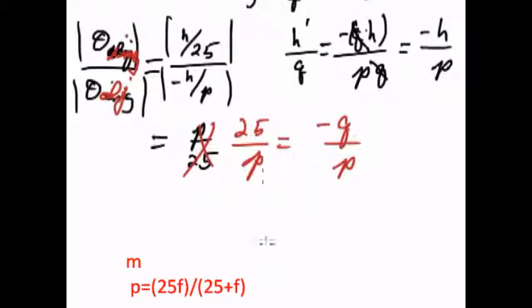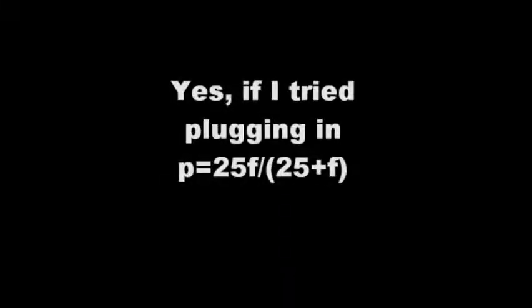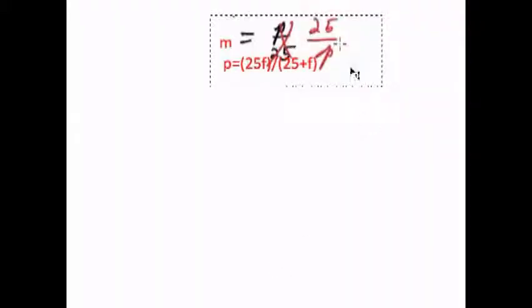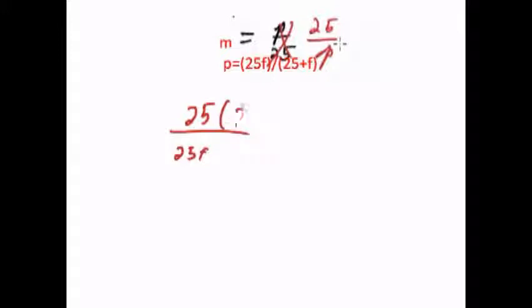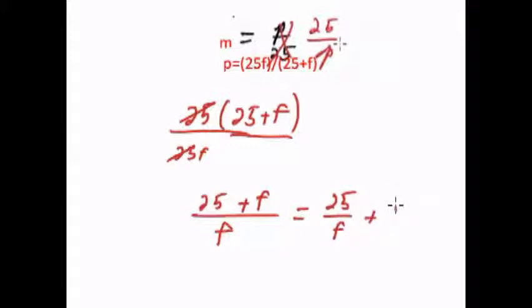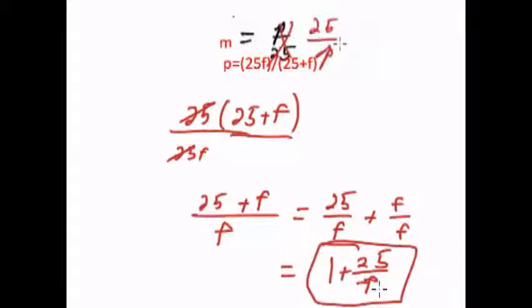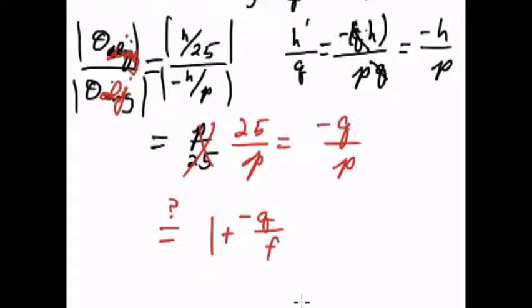And there's another step to this where I would like to show that this is equal to, I'm going to put a question mark here, Is this equal to 1 plus q over f? Let's quickly plug this thing in. So we'll have 25 divided by p, which is 25f times 25 plus f. And we're going to have the 25's cancel. And we'll have 25 plus f over f, which is equal to 25 over f plus f over f, which is 1 plus 25 over f. Or, I'm sorry, 1 plus negative q over f. This is the maximum magnification.